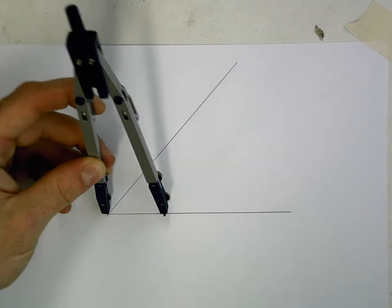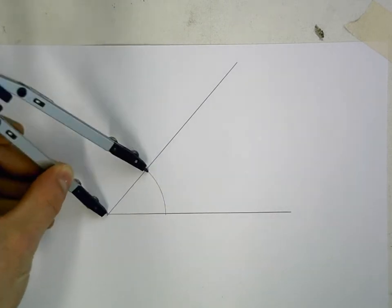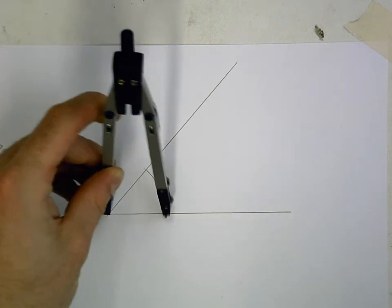Our compass goes on the point of the angle, and we strike an arc until it cuts both of our lines.